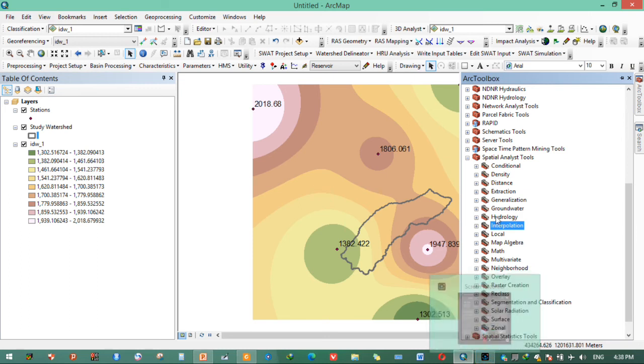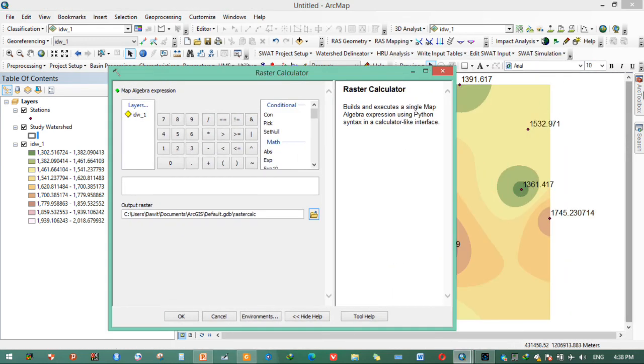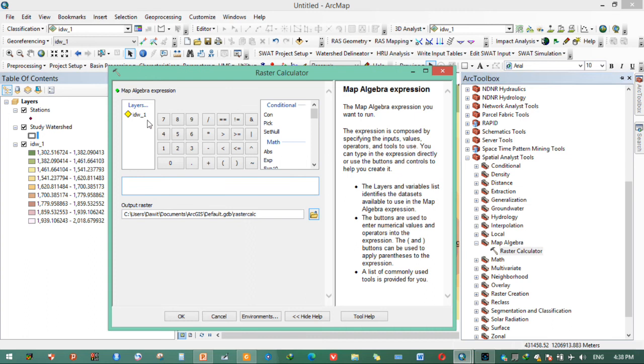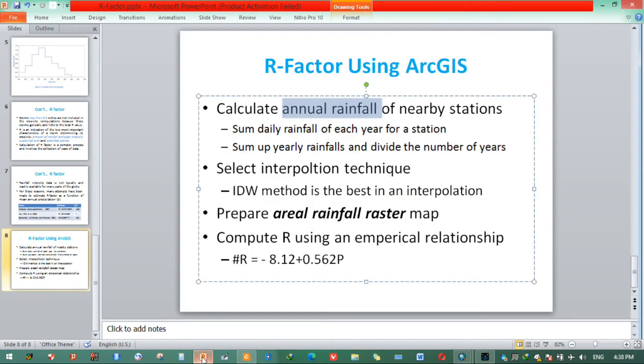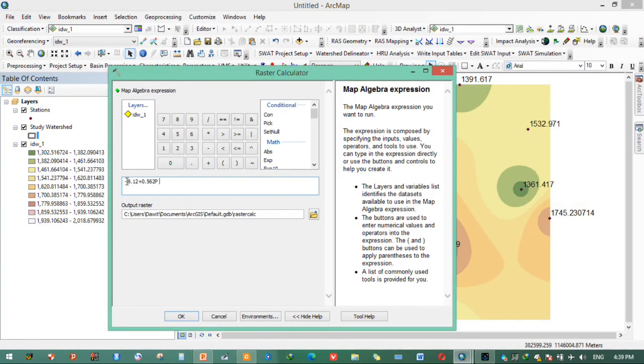The final step is we need to compute R factor. To determine R factor, we need to open Map Algebra. Here we need to calculate the raster. Raster calculator, that is the same window. In spatial analysis there is Map Algebra, there is raster operator. Open it.